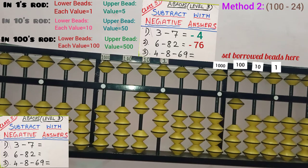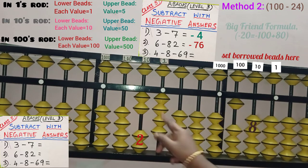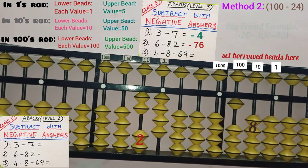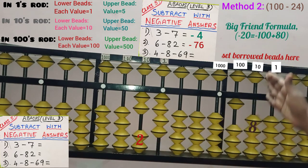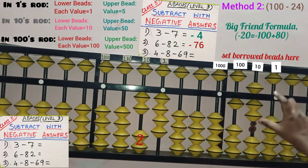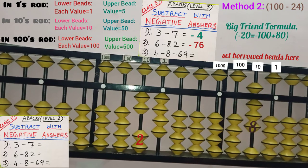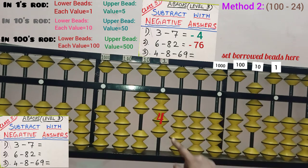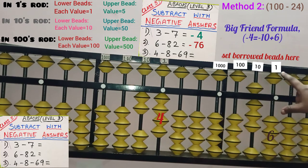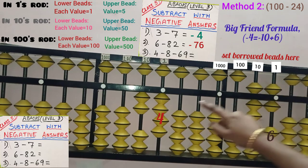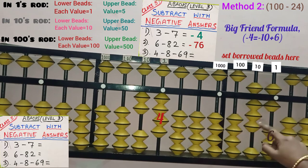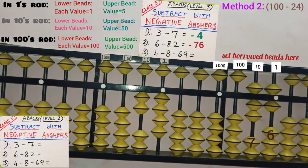In the second method, in 10's place 2 beads are there. 2's big friend is 8. So add that 8 beads in same 10's rod — 5, 6, 7, 8 — 2's friend 8 is added. And remove the borrow in 100's rod. In 1's place, 4 beads are there. 4's big friend is 6, so add 6 in same 1's rod where the 4 is available — 6 is added. And remove the borrow in next rod — minus 10. So minus 10 plus 4 gives us 76. Once borrowed beads are not written, minus 76 is our answer. This is method 2.